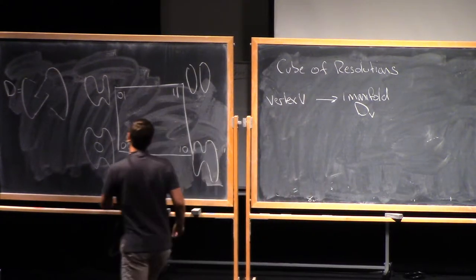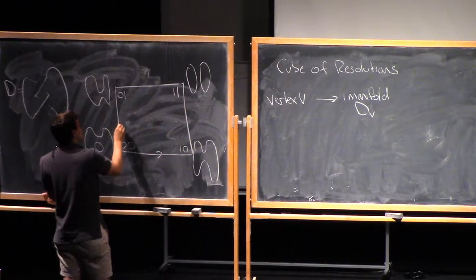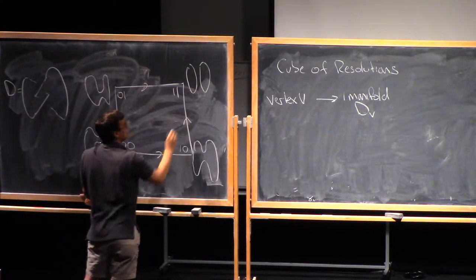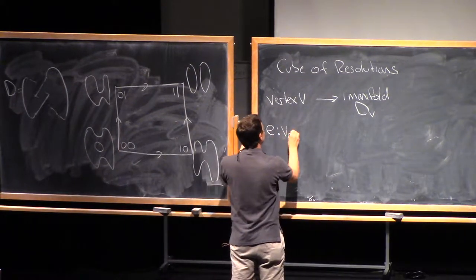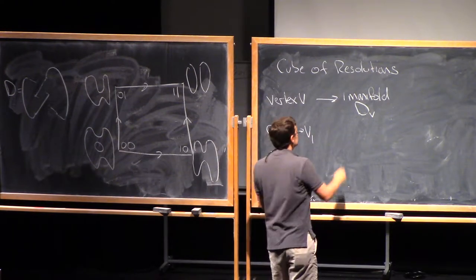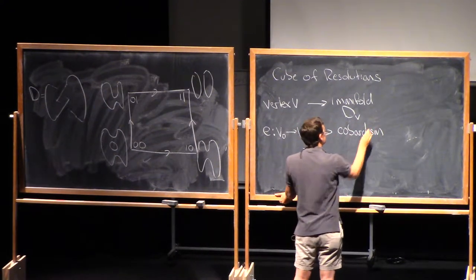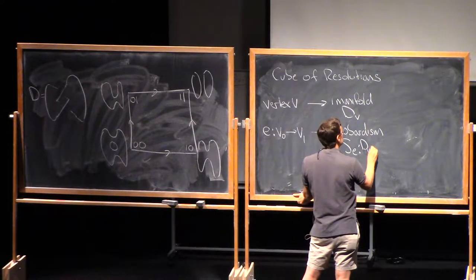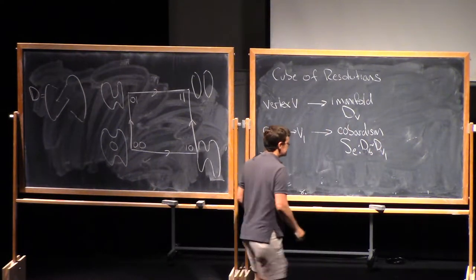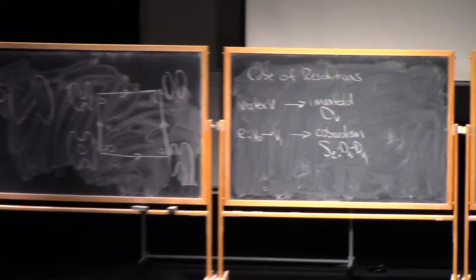So now let's talk about the edges of the cube. So I'll orient the edges so they always point, one coordinate always changes from 0 to 1 along an edge. I'll draw arrows pointing from the 0 to the 1, like this. And I'll think about an edge E going from V0 to V1. So now what I can do is I can decorate these edges with a cobordism. Let's call it S_E from d_{V0} to d_{V1}.